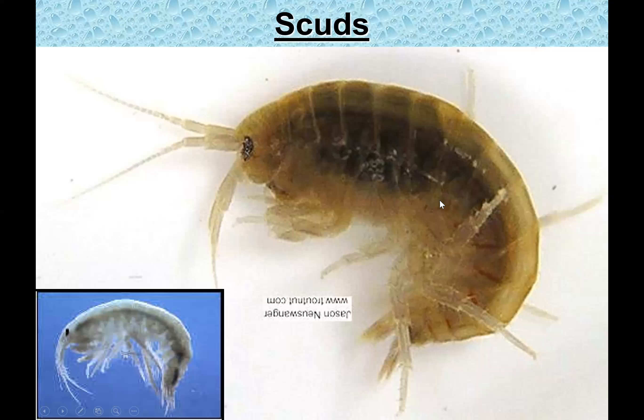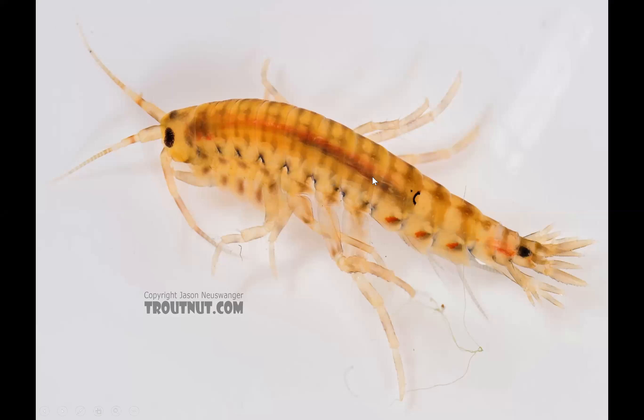Scuds — also called freshwater shrimp or side swimmers — are prolific in spring-fed streams, especially those coming out of limestone areas like Liddish Springs, Big Springs, and Donegal Springs, because they like hard water. They thrive on the calcium ions and watercress in those environments. They're a huge protein source for fish and amphibians and come in such great numbers in those streams. Finding scuds is a good indicator of cold, hard-water, limestone spring environments.